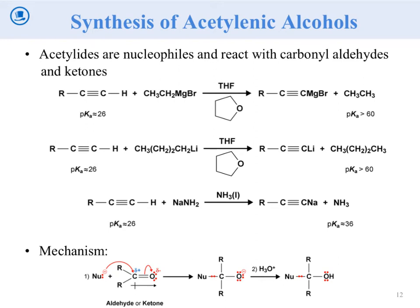We actually knew a carbanion already. You already knew one before the Grignard or the organolithiums. You've learned about how to deprotonate a terminal alkyne. The sp-hybridized C-H bond makes a really stable sp carbanion — the electrons go into an sp orbital as a negative charge, and the sp orbital is closer to the positively charged nucleus, making it more stable. We call these acetylides, or alkyne with a C⁻. These are good nucleophiles.